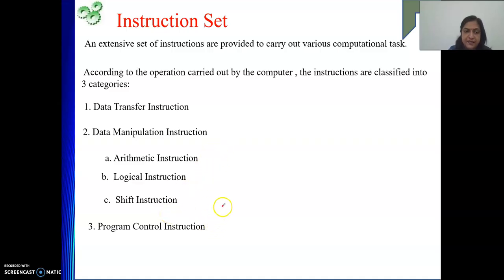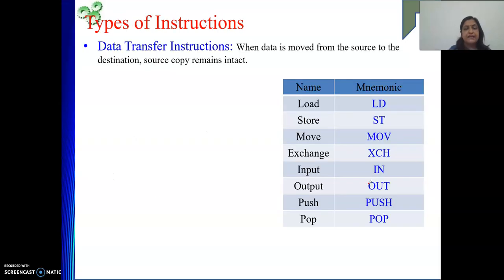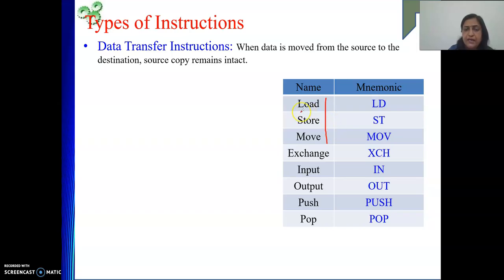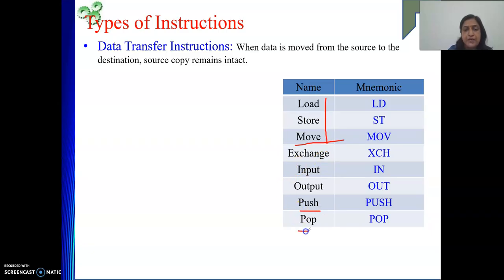We will see each of them in greater detail. The first type is data transfer instruction. Here are the various names of data transfer instructions typically available for an architecture: load, store, move — these three we have already seen. Load we have seen in our single accumulator-based organization. Load means getting something from memory to the processor side. Store means sending something from the processor side to memory. Move is for data transfer between two registers, or register to memory, or memory to register. Push and pop we have also seen in stack organization with zero address instructions.